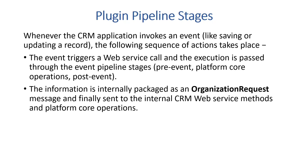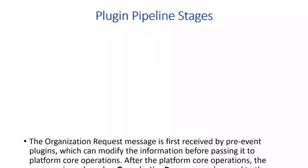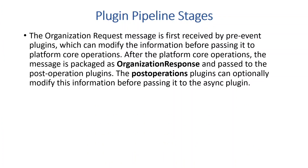The information is internally packaged as an organization request message and sent to the internal CRM web service and platform core operations, where it is checked for any conflicts with core operations. The organization request message is first received by the pre-event plugin, which can modify the information before passing it to the platform core operations — for example, assigning it to a specific queue or placing it in a wait state.